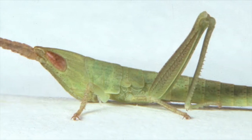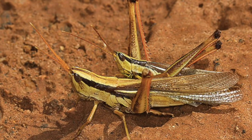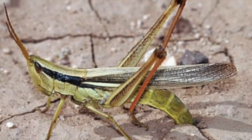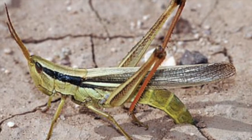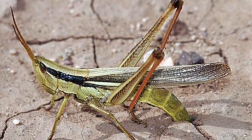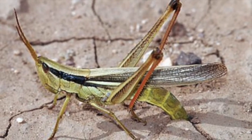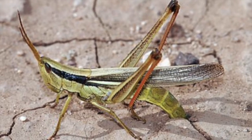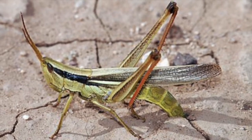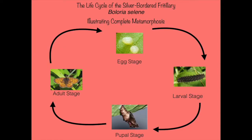One: egg. Two: nymph. Three: adult. The nymph looks like an adult; however, it's much smaller. Isn't it interesting to know that the nymph will shed its skeleton ten times in the two months it takes to become an adult?